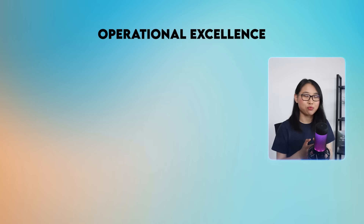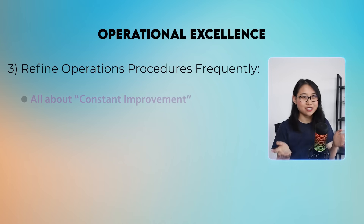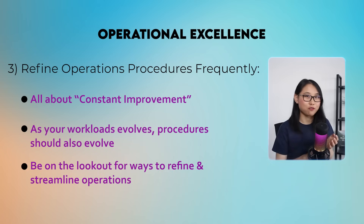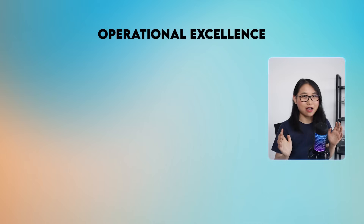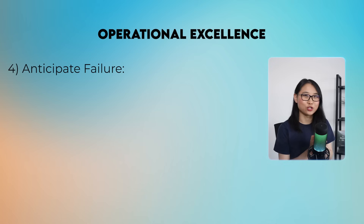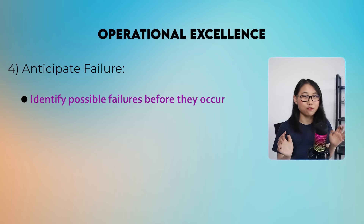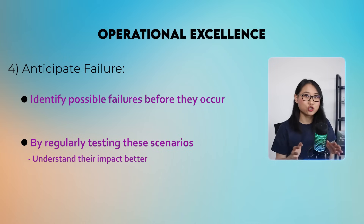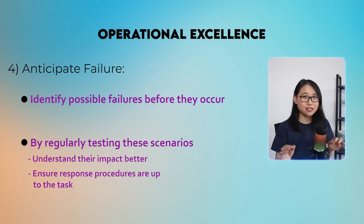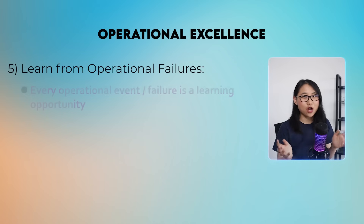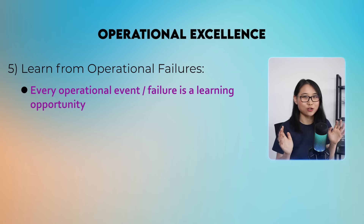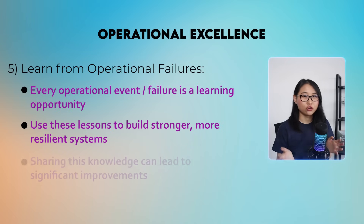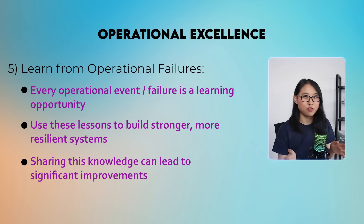The next principle is to refine operation procedures frequently — this is all about constant improvement. As your workload evolves, your procedures should evolve with it, so always be on the lookout for ways to refine and streamline your operations. Next is to anticipate failure: instead of waiting for things to go wrong, try to identify possible failures before they occur. By regularly testing these scenarios, you can better understand the impact and ensure that response procedures are kept up to date. Finally, learn from operational failures — every operational event or failure is a learning opportunity. Use these lessons to build stronger, more resilient systems, and share this knowledge across your different teams so they can learn from each other.